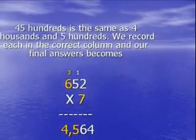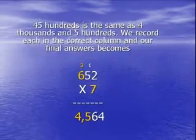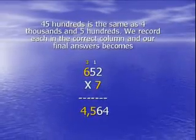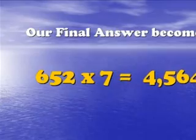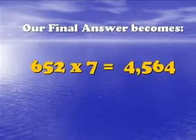45 hundreds is the same as four thousands and five hundreds. We record each in the correct column and our final answer becomes 652 times seven is 4564.